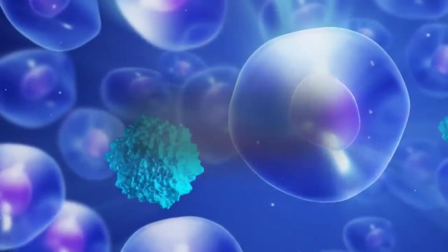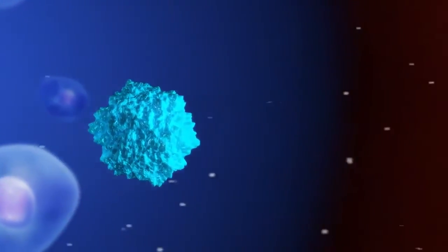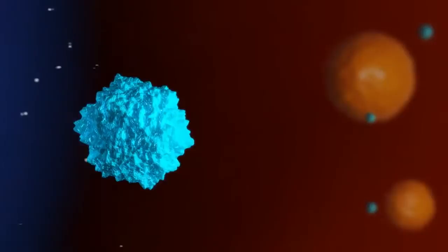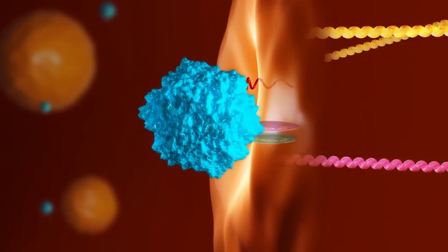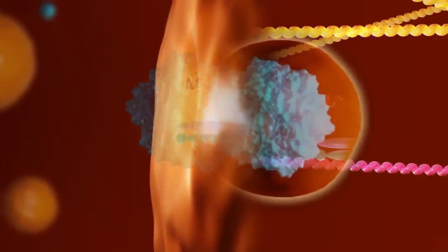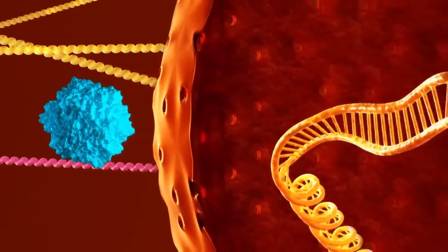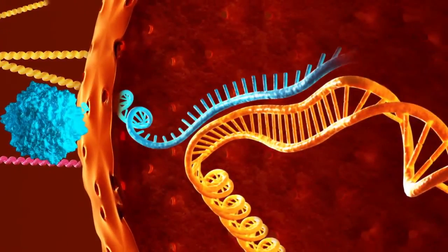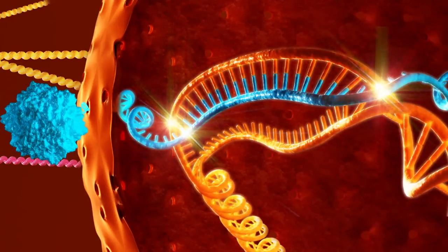Adeno-associated virus occurs naturally and is extremely efficient at driving the delivery of genomic material into a wide variety of cells. Upon binding to receptors on the cell surface, the viral capsid is drawn into the cell and uses the machinery of the cell to deliver a stretch of single-stranded DNA into the nucleus. The cell's native homologous recombination repair mechanism then drives crossover events that take place within the homology arms, thereby introducing the targeted change into the genome.